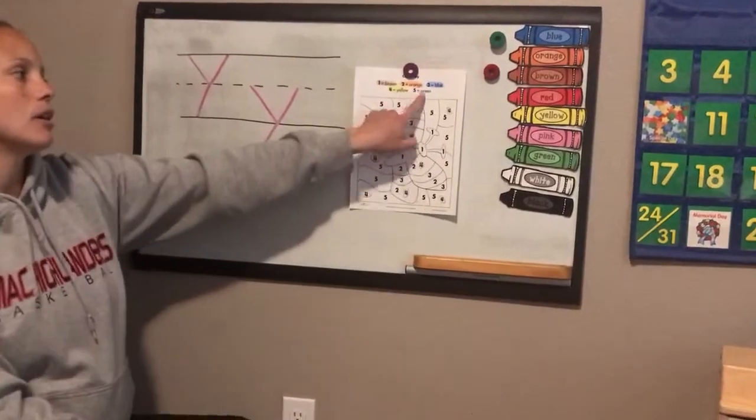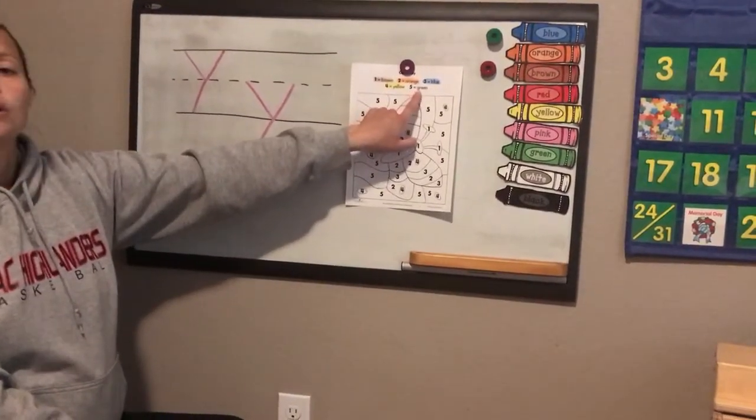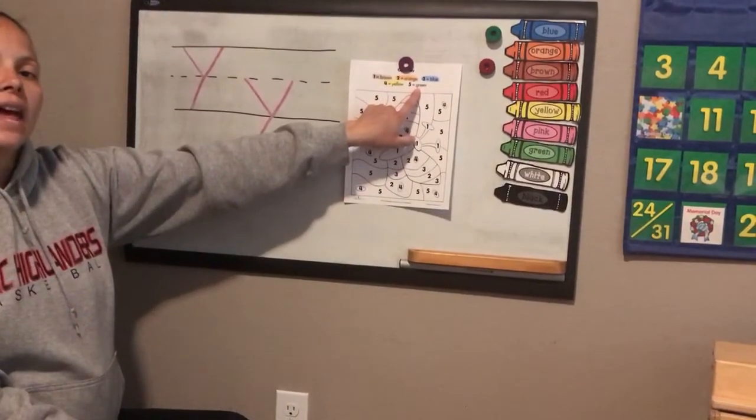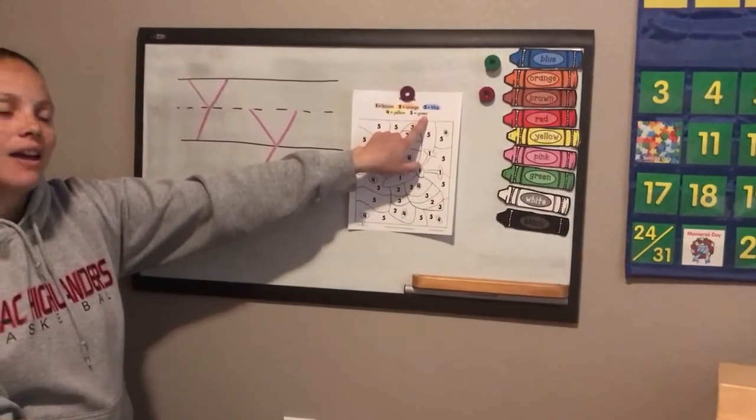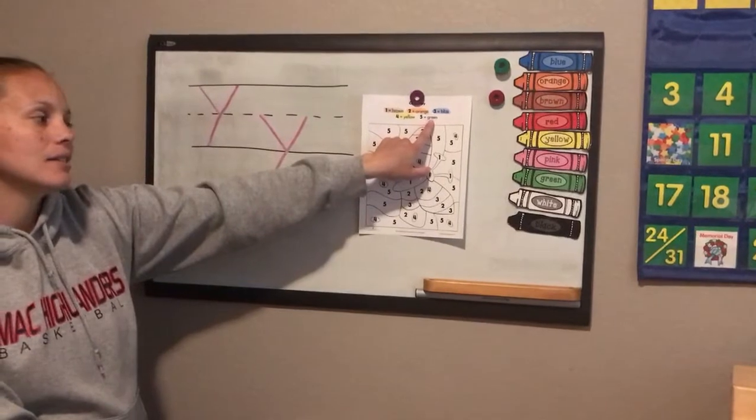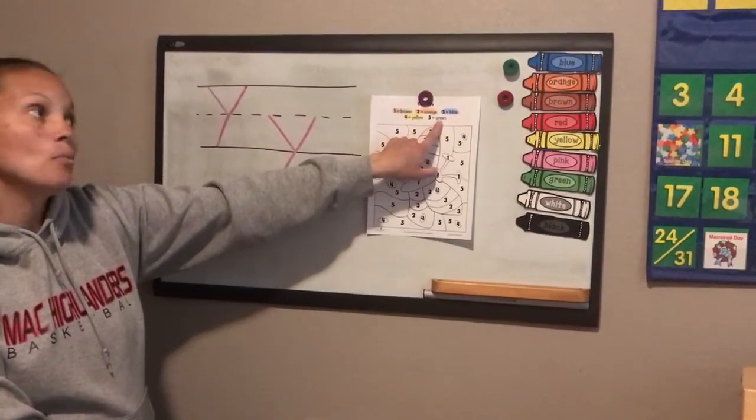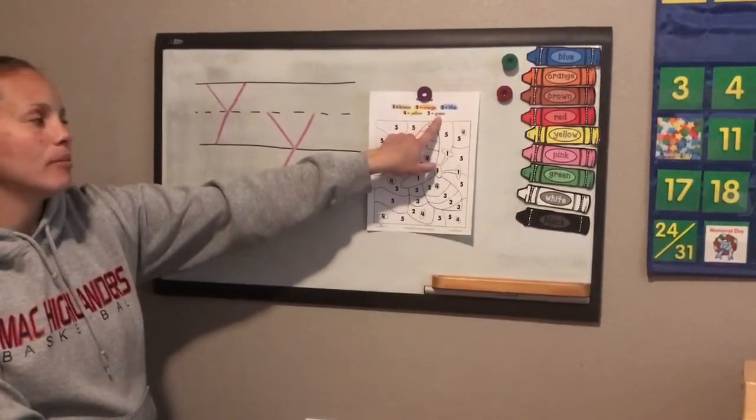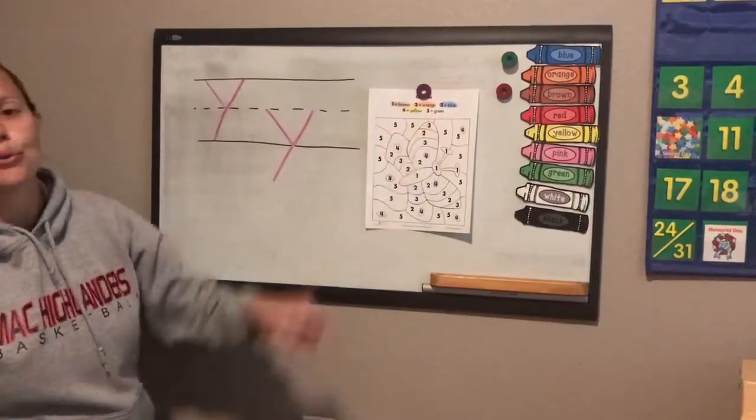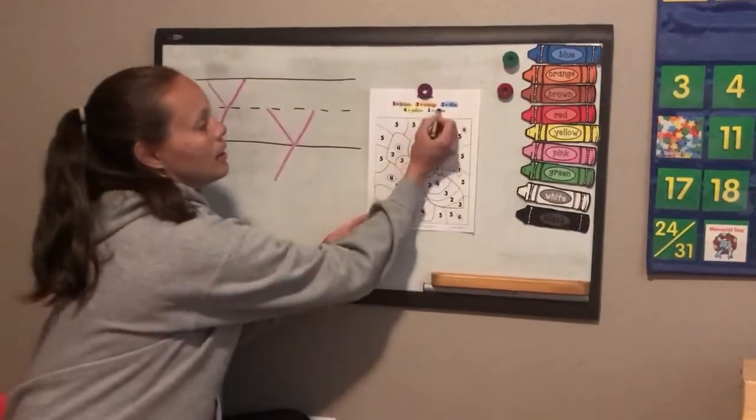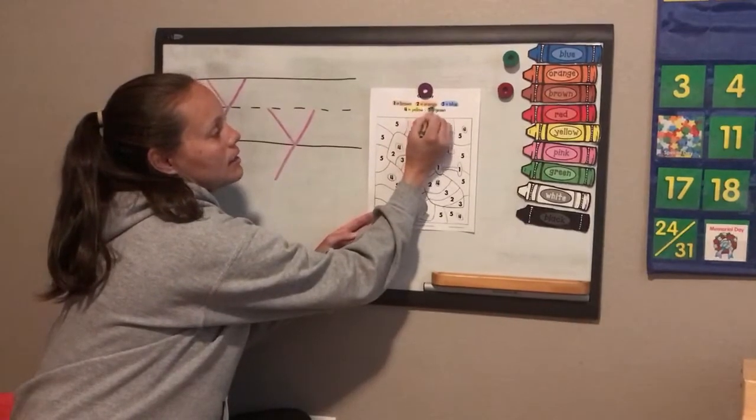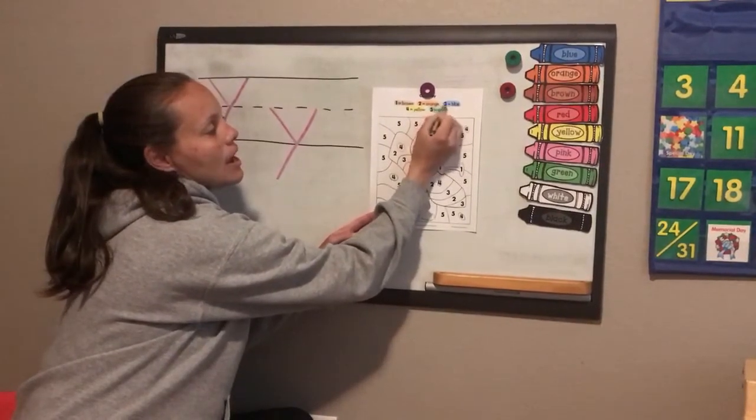All right, and now we're on to number five, which is G-R-E-E-N. That was one of our colors last month and the month before. That is green. So go ahead and grab a green and color your five green.